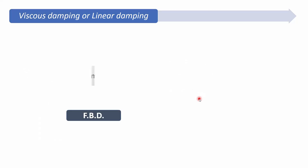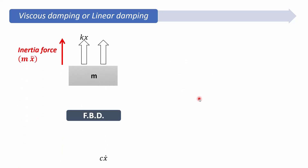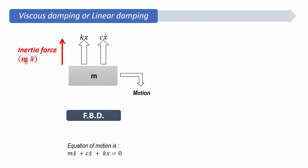We will see these forces in detail. Let us draw the free body diagram first. Suppose the direction of motion of the mass is in the downward direction. Then the inertia force mx-double-dot will act in the upward direction, opposite to the direction of motion. The spring force kx will also act in the opposite direction, and the damping force cx-dot will also act in the upward direction. So we can say the equation of motion is: mx-double-dot + cx-dot + kx = 0.